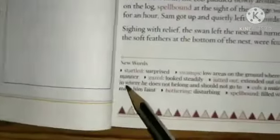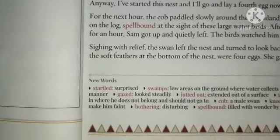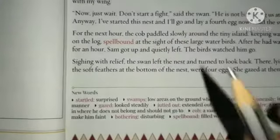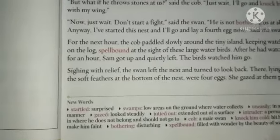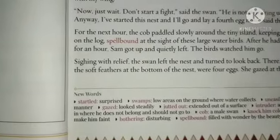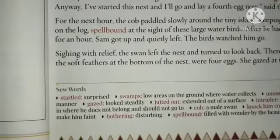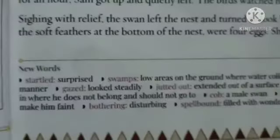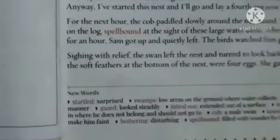The rock's extended part is called 'jutted out'. 'Intruder' means a person who has come in where he does not belong and should not go. For example, this earth belongs to us — if aliens come to earth, that is an intruder. If we go deep in the sea, we are not water habitats, so we become the intruder in the sea.